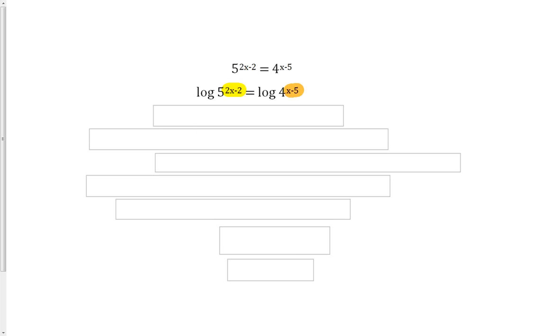So on the left side, that 2x minus 2, we're going to bring that out front and multiply it by the log of 5. On the right side, we have an x minus 5 that we're going to bring out front and multiply it by the log of 4.